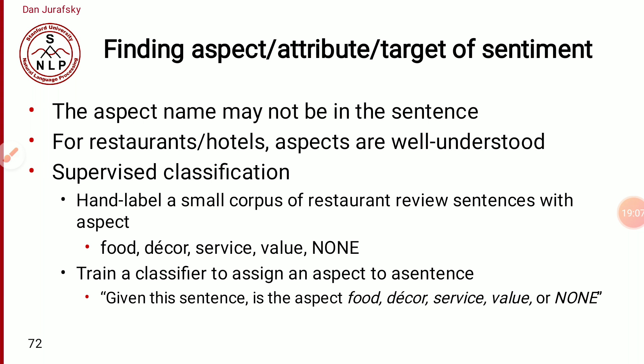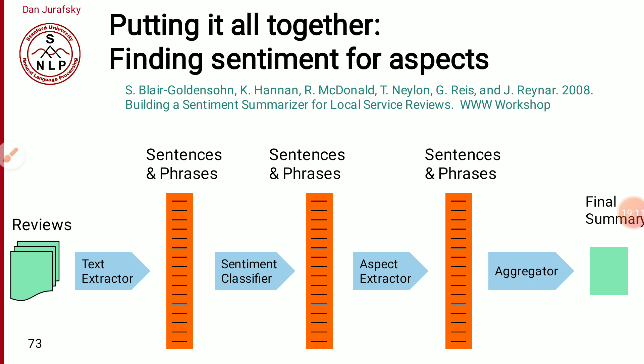Putting it all together for finding sentiment of aspects: we need a text extractor to find all the phrases — whether sentence-level or sub-sentence phrases. Maybe some are positive, some negative. Then we go for aspect extraction. We have seen some of the methods, then we need to find out all the aspects. And then we will get a positive or negative label for each aspect — this is the overall aspect-level sentiment analysis pipeline.